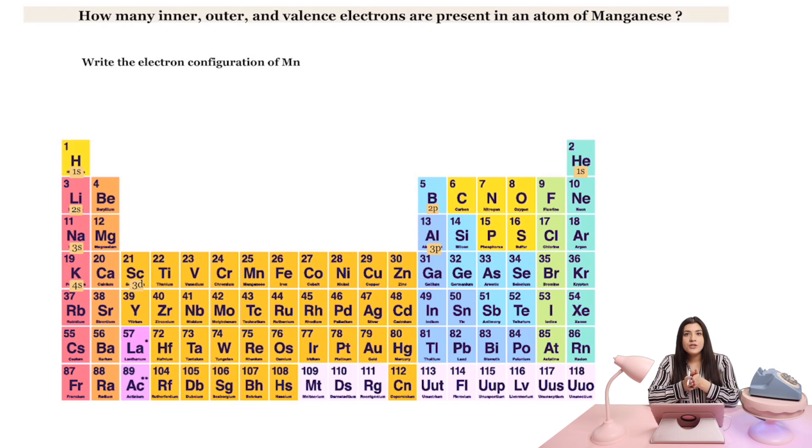So the first thing we want to do for this question is to figure out the electron configuration. Let's review how to figure out the electron configuration specifically for manganese. So what I'm going to start off with is just identifying where manganese is on our periodic table. And we'll find it right here, so I'm going to go ahead and circle that.